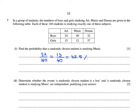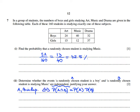Determine whether the events 'a randomly chosen student is a boy' and 'a randomly chosen student is studying music' are independent, and justify our answer. If we call the first event A and the second event B, we know they are independent if and only if P(A and B) equals P(A) times P(B). So we need to calculate each of these probabilities.